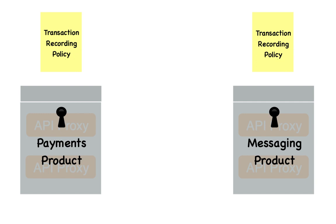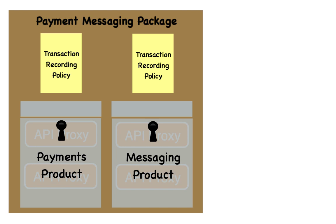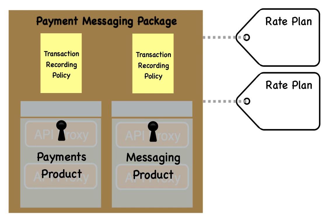Next, you'll create a package for each product or group of products that you want to monetize. For example, you can take your payments product and your messaging product and group them into a package that you offer to your developer community. Once you've created a package, you can create one or more rate plans which define the business model for your API package. A rate plan defines how and how much you will charge for using your API. It also defines whether you will include a premium period, setup fees, and revenue sharing, amongst other options.